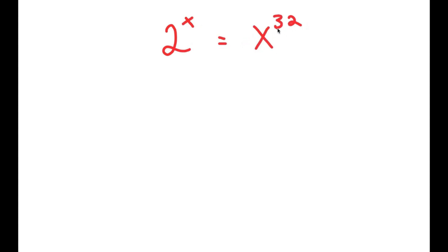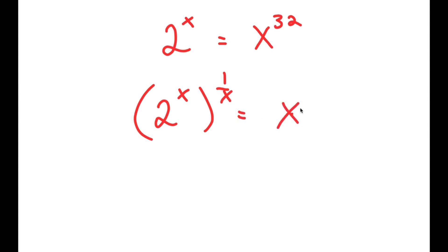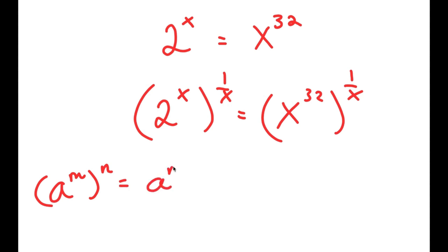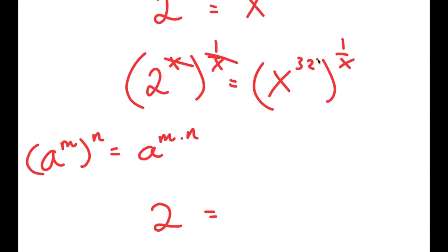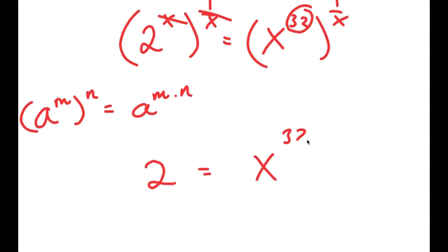In this video, I'm going to solve the equation 2 to the power of x is equal to x to the power of 32. To solve this, I'm going to first start by taking the power of 1 over x on both sides. So I get 2 to the power of x to the power of 1 over x is equal to x to the power of 32 to the power of 1 over x. The reason I did this is because a to the power of m to the power of n equals a to the power of m times n, so x and 1 over x cancel out, leaving just 2 on the left, and 32 over x on the right.